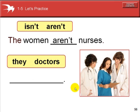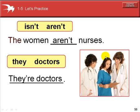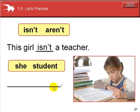The women aren't nurses — they're doctors. This is a use of the negative with the contraction: they aren't, or they are not. The second example is a positive: they are, they're doctors. This girl isn't a teacher — it's singular, negative. She's a student — singular, positive. She is a student. She's a student.